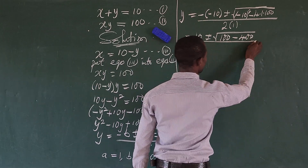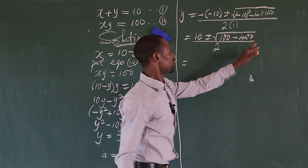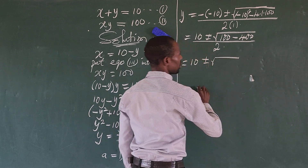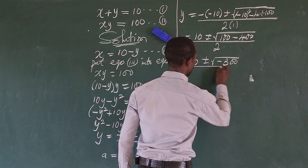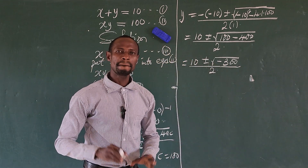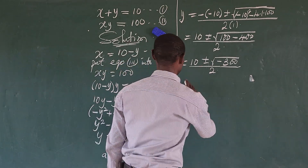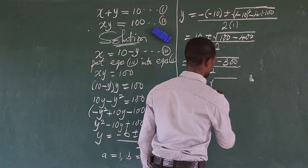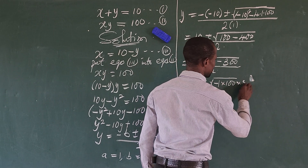Subtracting gives us 10 plus or minus the square root of minus 300, all over 2. We can split minus 300 into minus 1 times 100 times 3. So this becomes 10 plus or minus the square root of minus 1 times 100 times 3, all over 2.